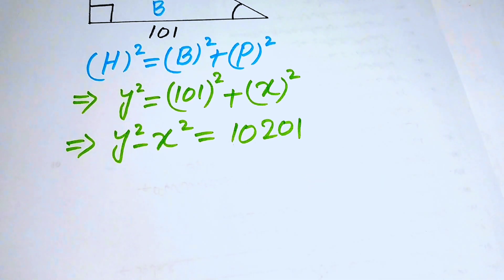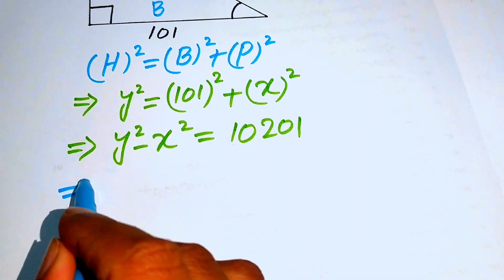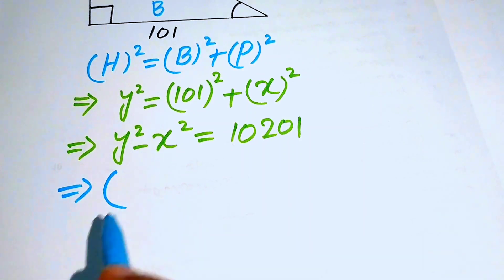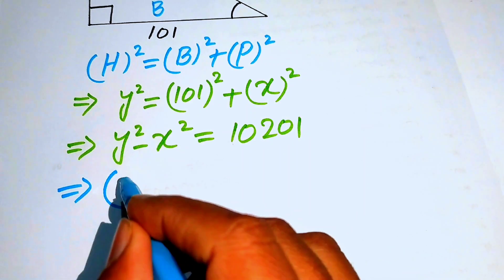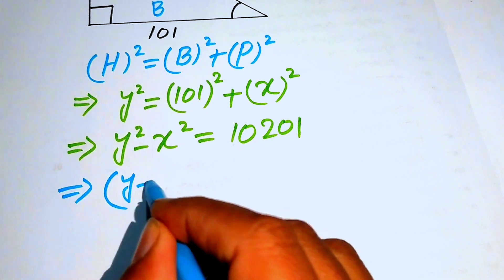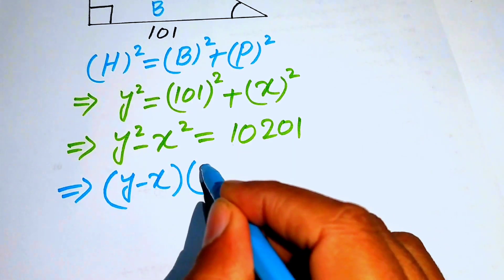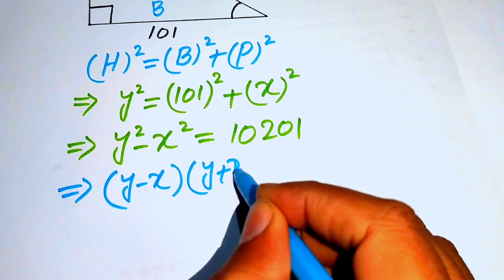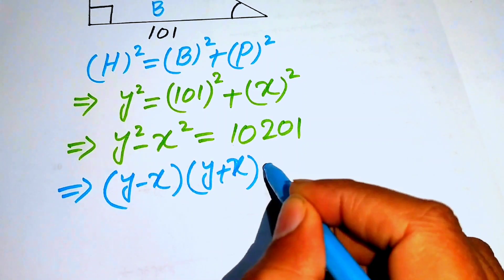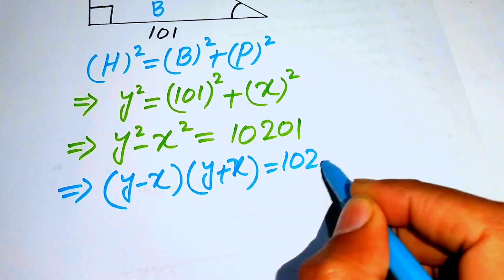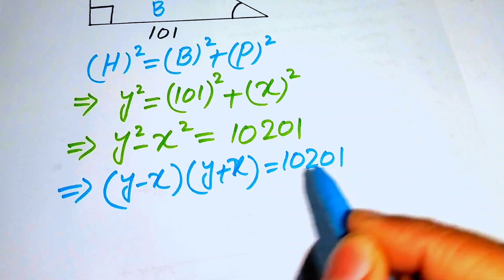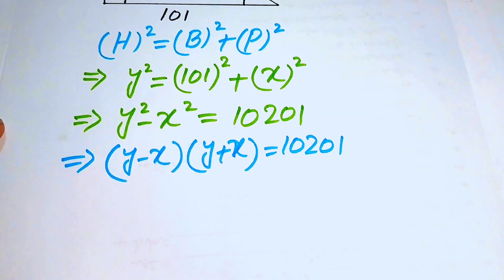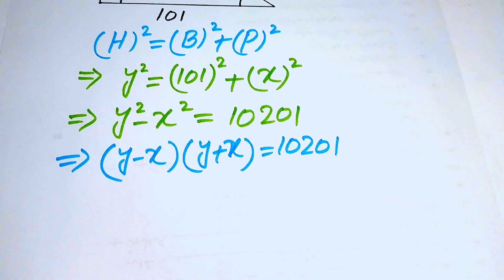On the left-hand side we apply the algebraic identity a² − b² = (a − b)(a + b), giving us (y − x)(y + x) = 10201.